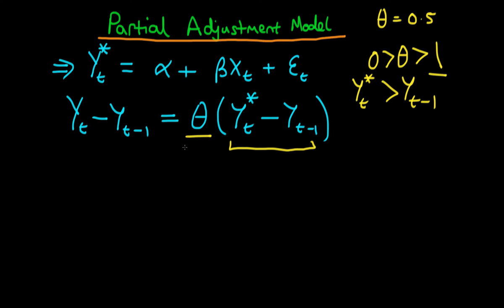What sort of things might be causing this partial adjustment? Well, this inertia could be caused by a whole range of factors. One of them could be some sort of habit formation, where individuals become particularly addicted to a particular type of behaviour, for example.